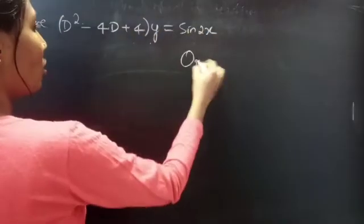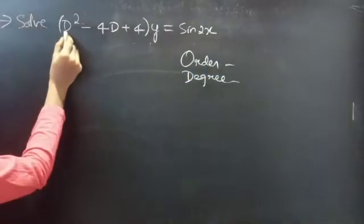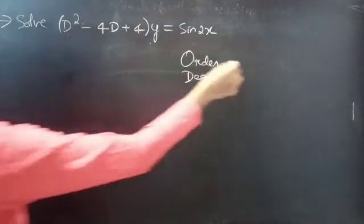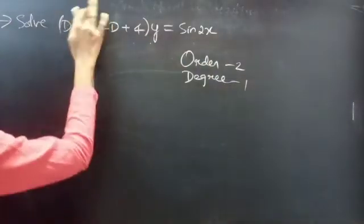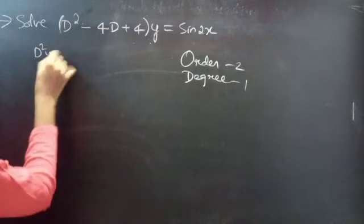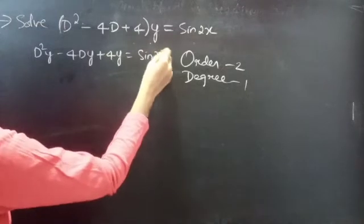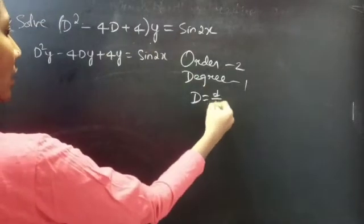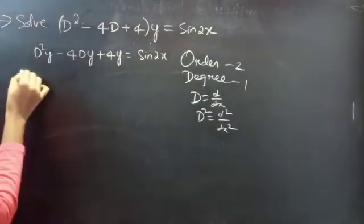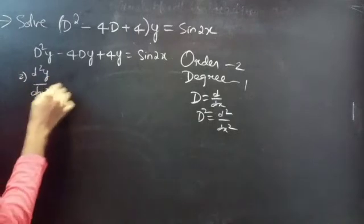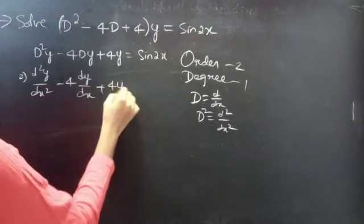Let's find the order and degree of the given equation. Here, the highest derivative is D², so the order will be 2, and the highest power of the highest derivative is 1, so the degree will be 1. You can write the given equation as D²y - 4Dy + 4y = sin 2x.